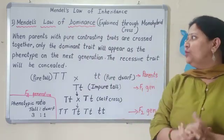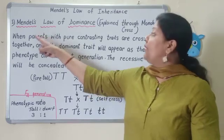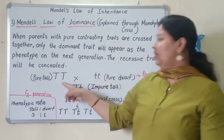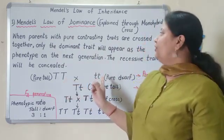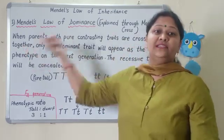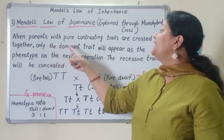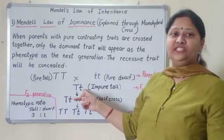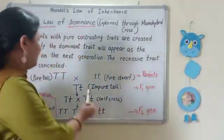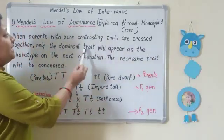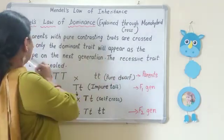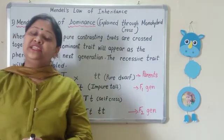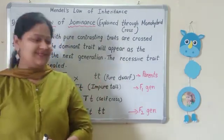From this observation, Mendel gave Mendel's law of dominance — dominance, meaning prabhavi hona. When parents with pure contrasting traits — pure tall (TT) and pure dwarf (tt) — are crossed together, only the dominant trait will appear in the F1 generation as the phenotype. Here the dominant trait is tallness. So in the F1 generation, the dominant trait is what appears as the phenotype, the physical appearance visible from outside.